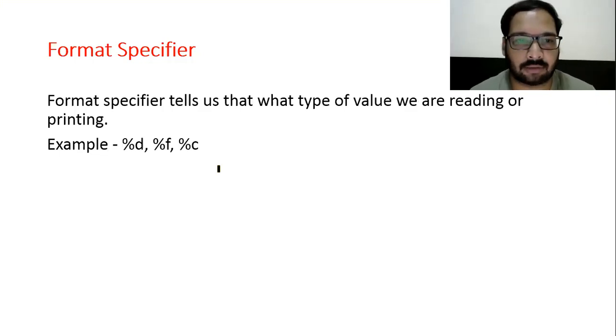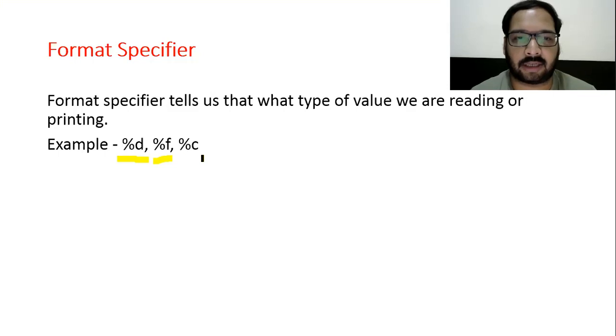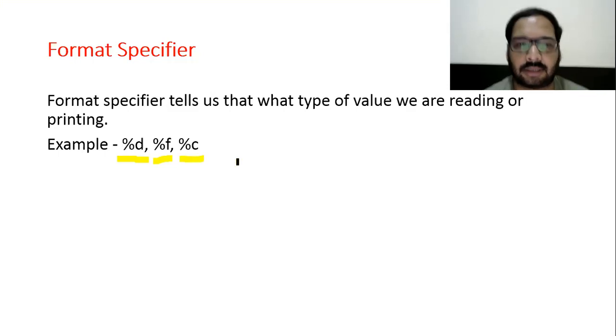Format specifier: whenever you need to perform reading or printing operations through printf and scanf, for int we use %d, for float type variable we use %f, and for character type variables we use %c.